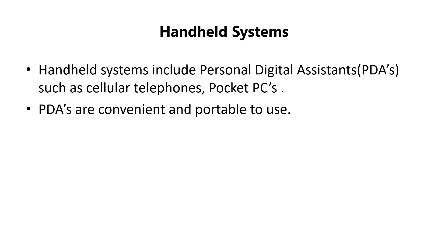Last is the handheld system. It includes personal digital assistants such as cellular telephones and pocket PCs. These are very special purpose embedded operating systems. The size of such devices is limited, due to which they have a small amount of memory, slow processors and small display screens. PDAs are convenient and portable to use. Wireless technology can be used with handheld devices such as Bluetooth, which allows access to emails and web browsers. Examples of handheld OS are Linux OS, Windows, Android, Packet PC, Palm OS, etc.